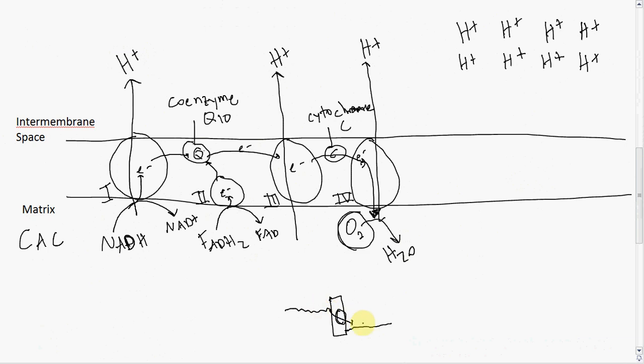Much like this dam can separate high and low concentrations of water, the inner membrane in the mitochondria separates the high concentration of H+ on the intermembrane space side and the low concentration on the matrix side. When we let the H+ through in a controlled way, we can harness that energy.